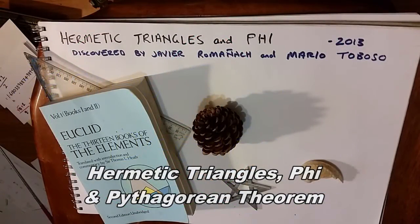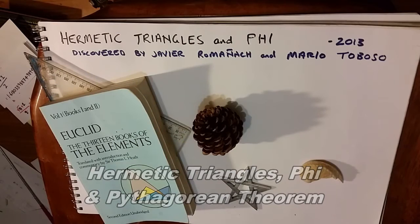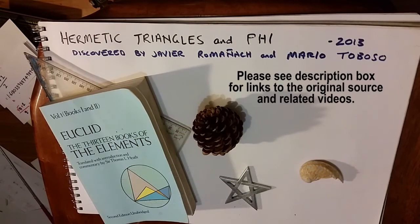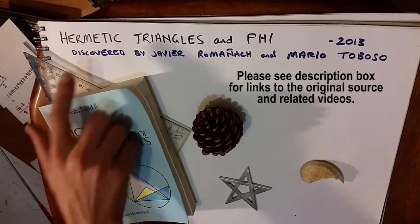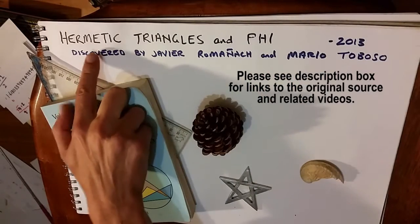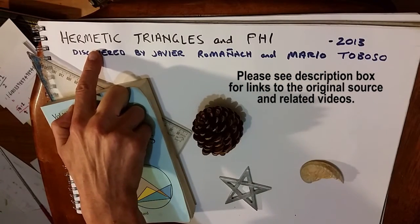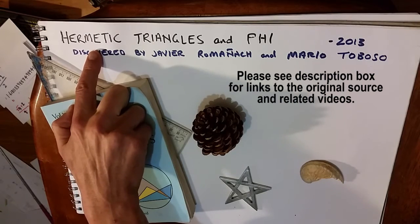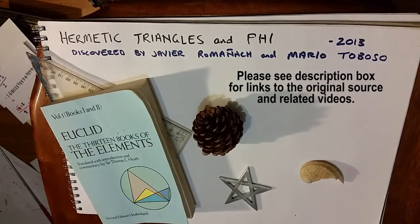In this video on continuation of Vesica Piscis, using it as a template, I'm really going to get into phi and finding it both through Pythagorean theorem and drawing it with the geometry.